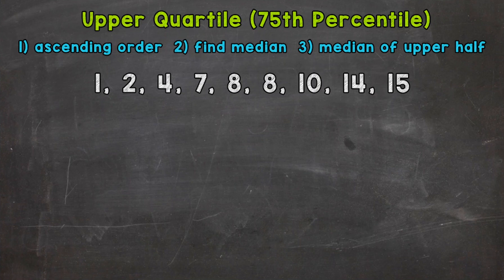Now quartiles divide datasets into quarters or four equal parts. The upper quartile is going to be the 75% mark within our data, so the 75th percentile. It separates the upper 25% from the lower 75%. So let's jump into our example to see exactly what this means and looks like.